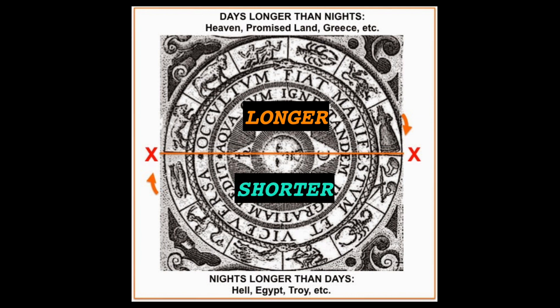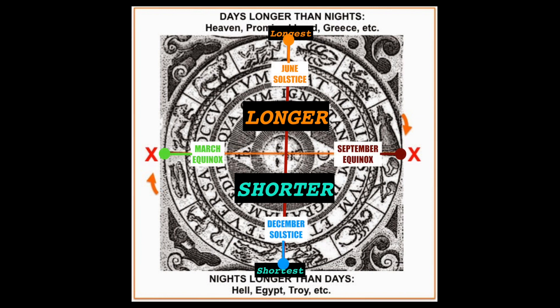The March equinox, where we started the video, is on the left side of this particular arrangement on the page. As we travel around the edge clockwise, we go up from there to get to the June solstice, the longest day of the year. From there the days begin to grow shorter again as the Sun's arc begins to move back south towards the celestial equator, which will cross at the September equinox on the right, also marked with an X, and on down to the shortest day of the year at the December solstice. From there the Sun's path turns again and begins to move back towards the north, crossing the celestial equator at the X on the left — the March equinox again, where we are now as I make this video.